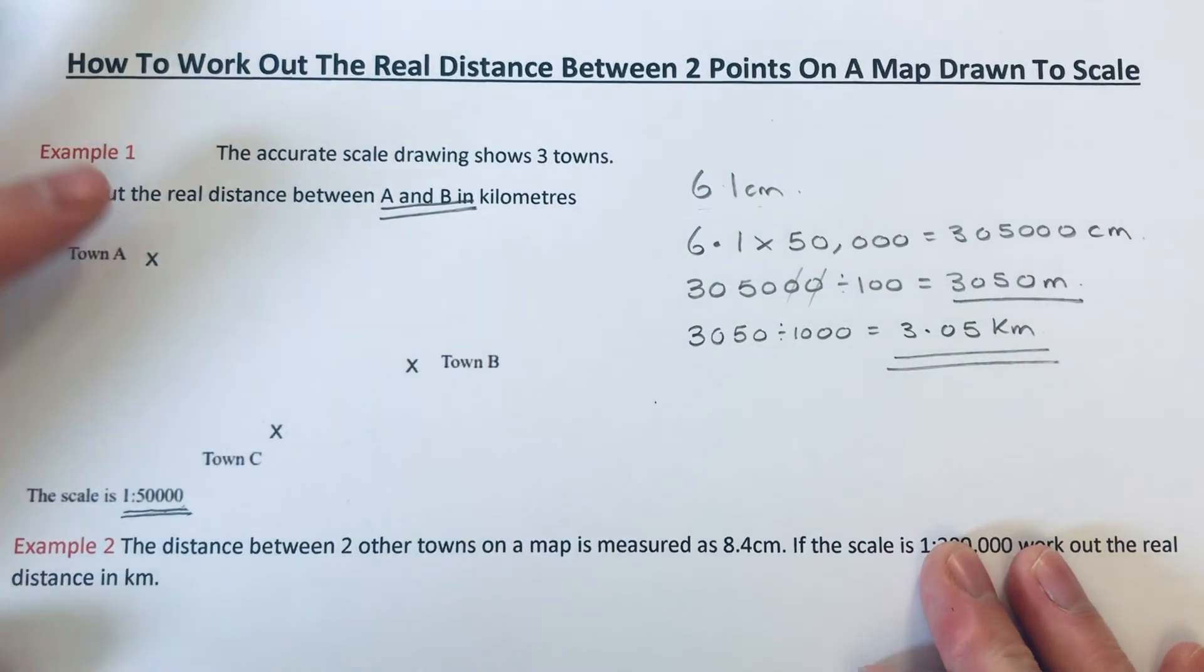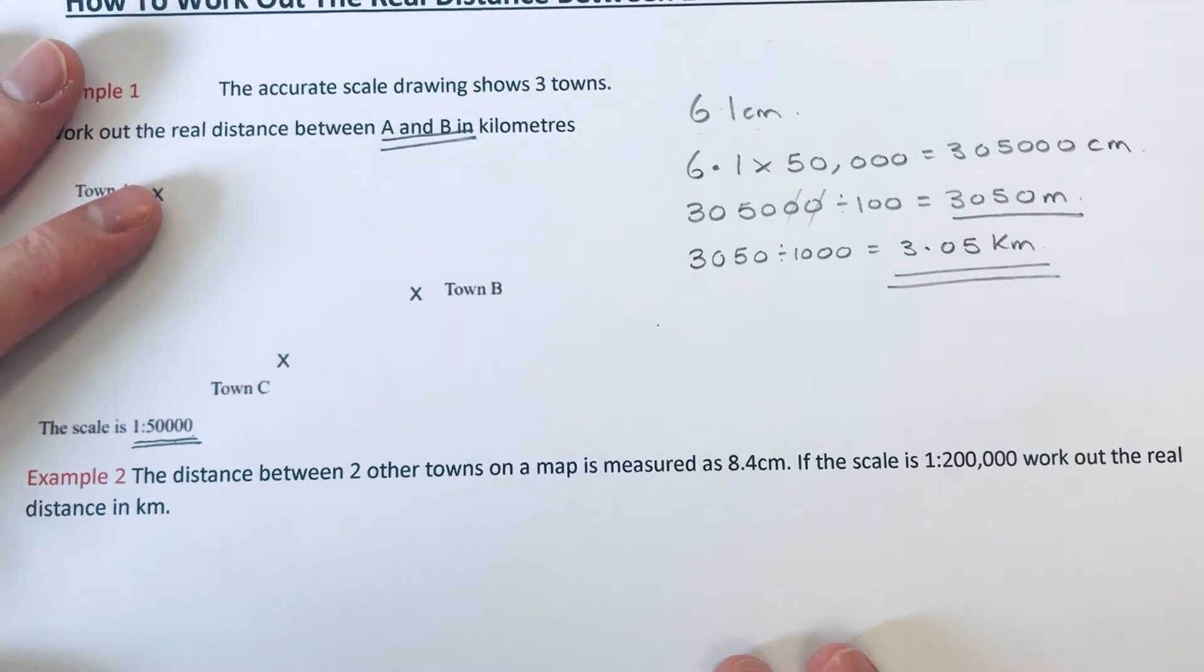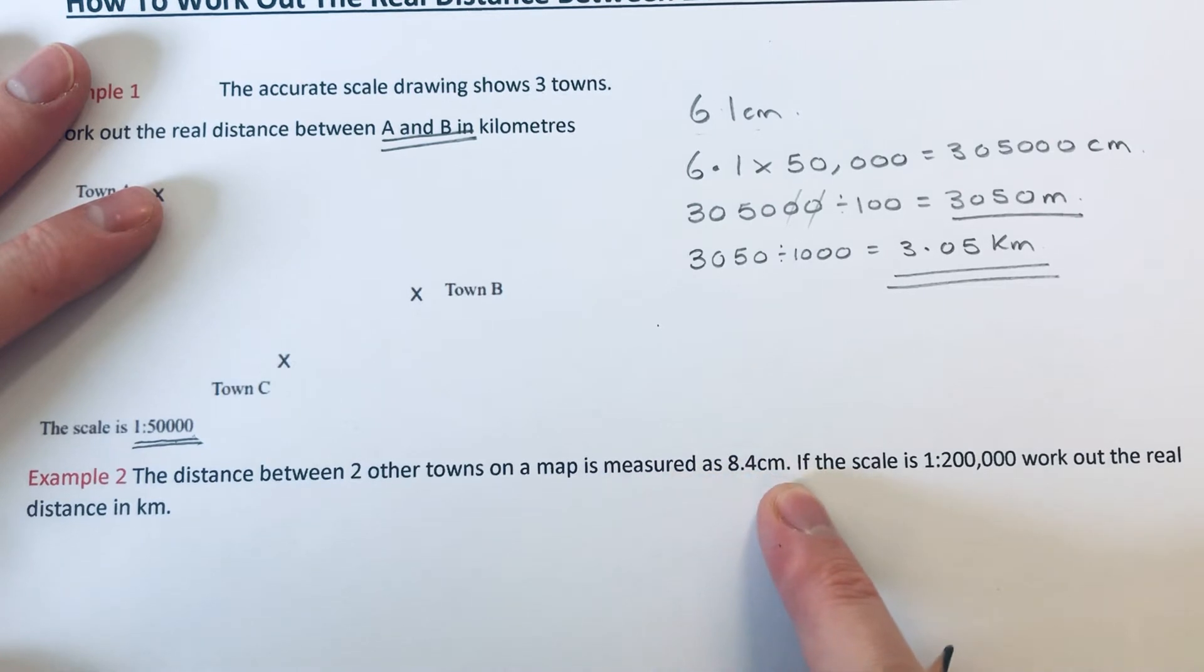Let's have a look at one more example. The distance between two other towns on a map is measured as 8.4 centimeters. If the scale is 1 to 200,000, work out the real distance in kilometers.